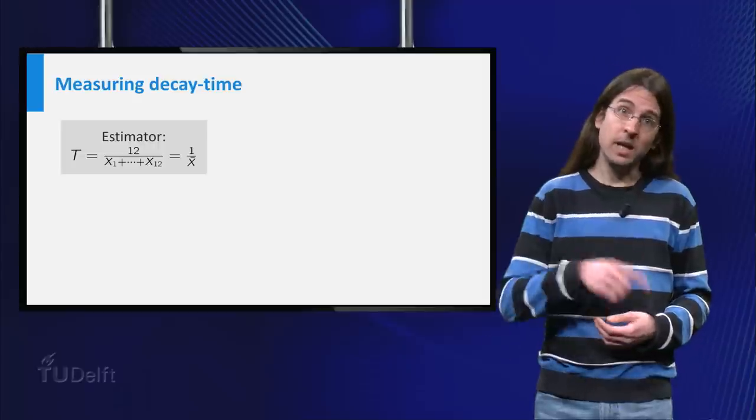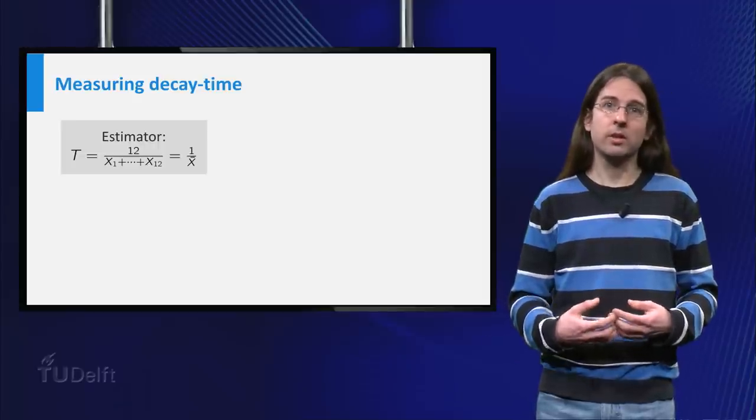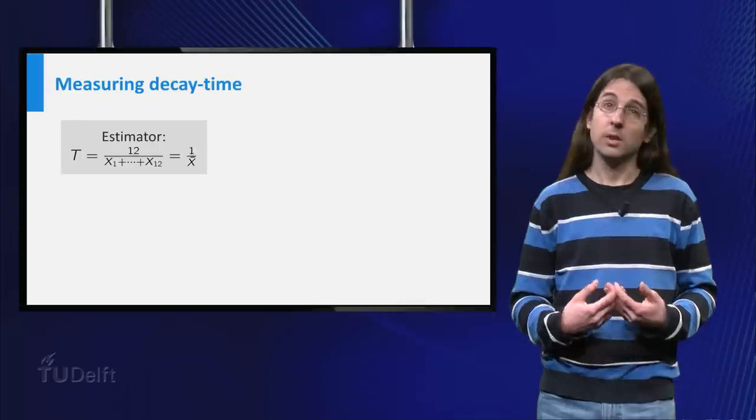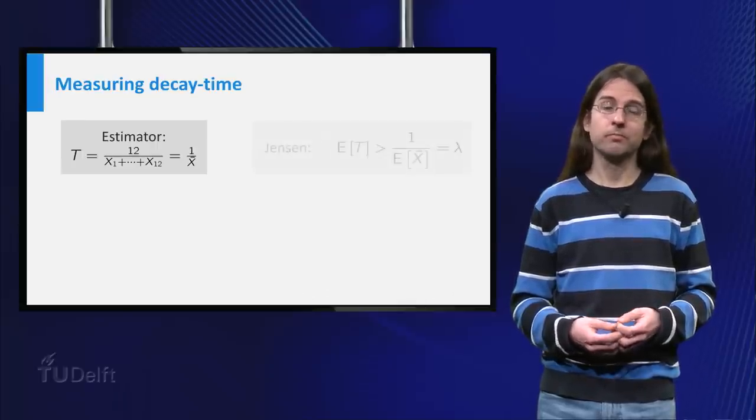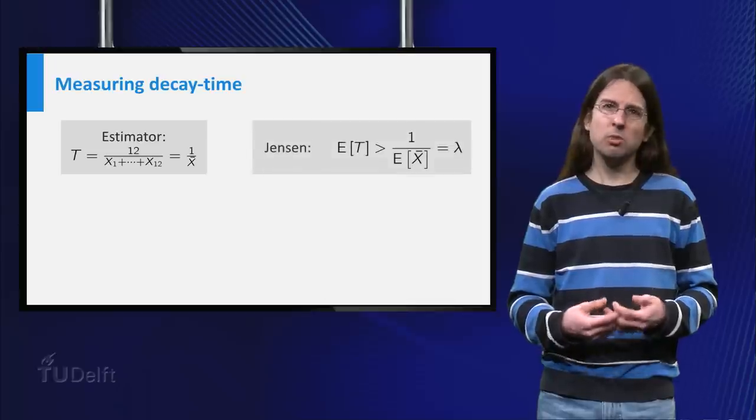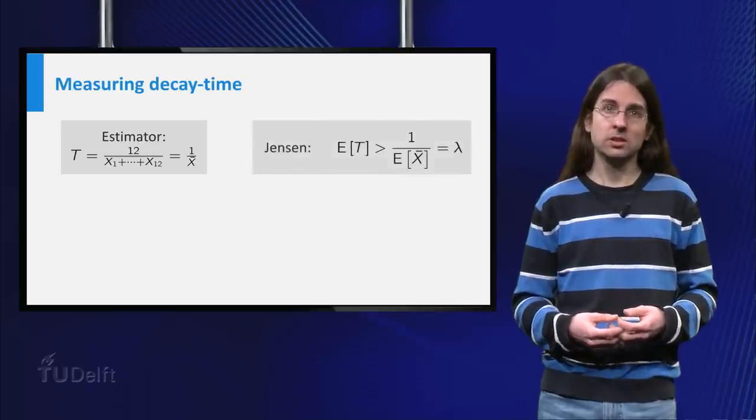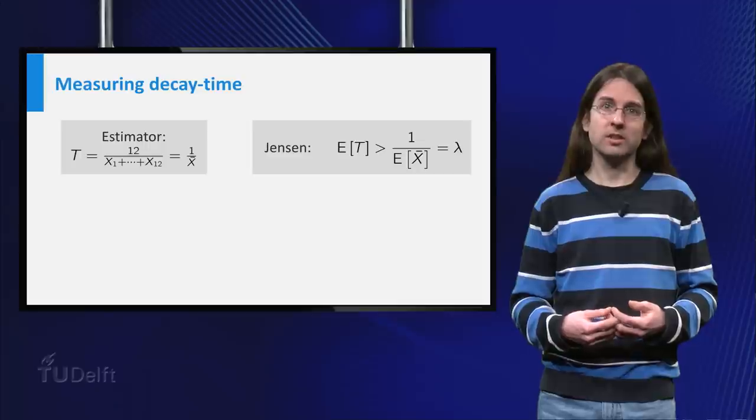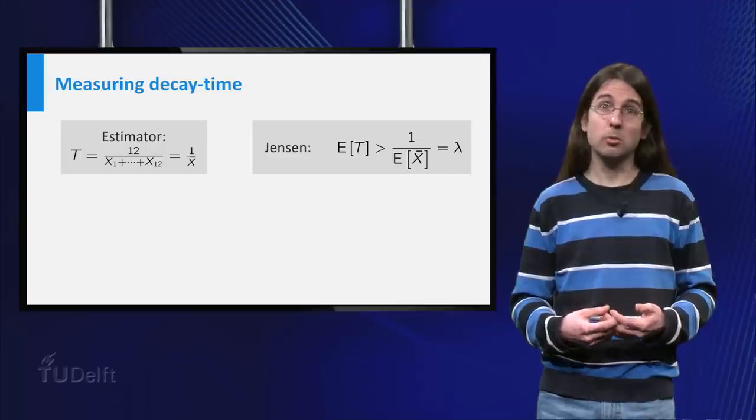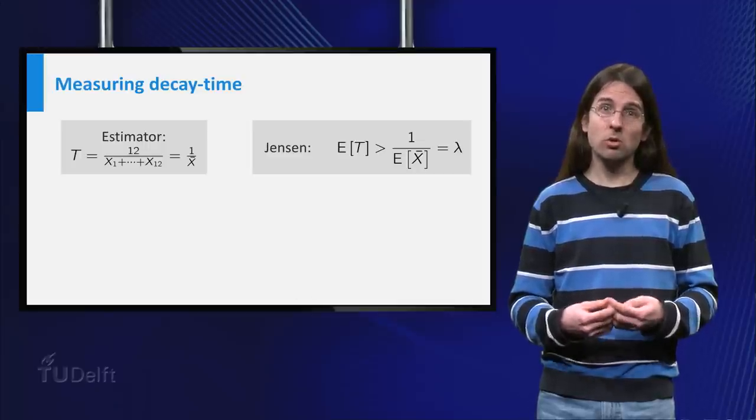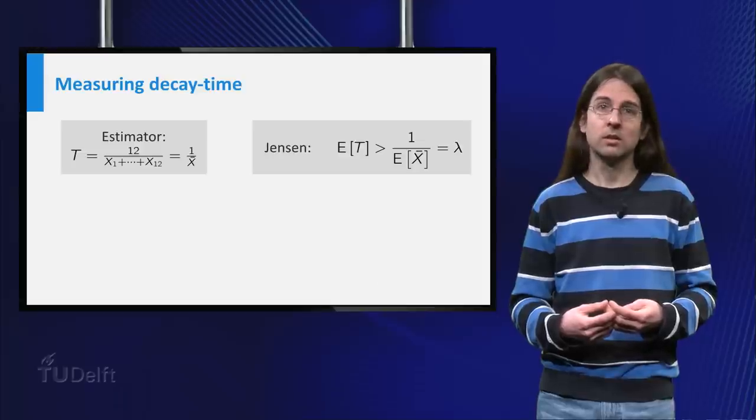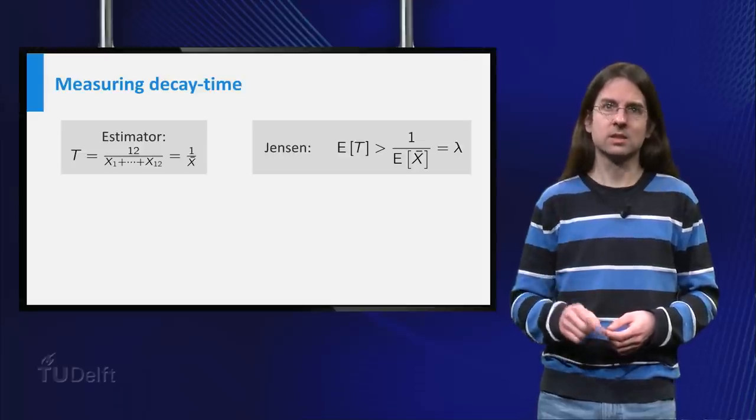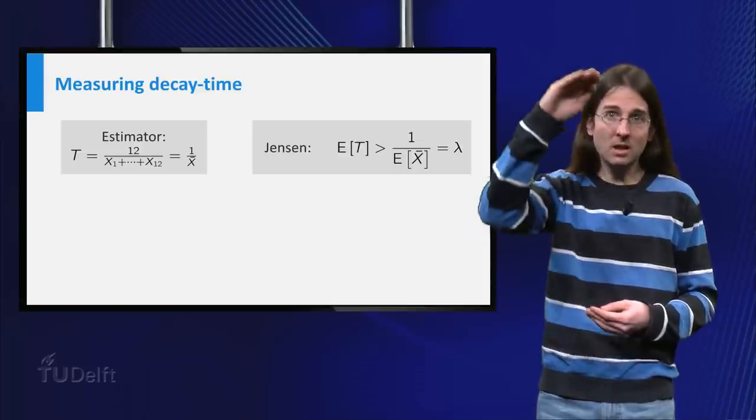Now, let's get back to our estimator of 1 over the average. By the law of large numbers, we know that the expectation of the average equals 1 over lambda. But since 1 over x is a concave function, Jensen's inequality tells us that the expected value of 1 over the average is more than 1 over the expectation of the average, which is lambda. This means that our estimator is biased. On average it is too high.